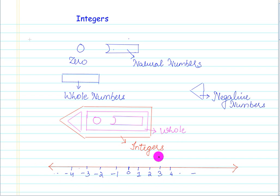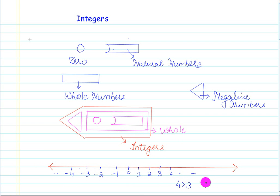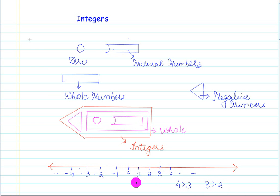Now to give you an idea about what is bigger than what or what is smaller than what — let's say I take the number 4. What do you say, is 4 greater than 3 or less than 3? You would say 4 is greater than 3. So 4 is greater than 3 and 3 is greater than 2. Can I make a rule here: the number on the right hand side of any given number is bigger than the number itself. As 4 is on the right hand side of 3, 4 is greater than 3, and as 3 is on the right hand side of 2, 3 is greater than 2.